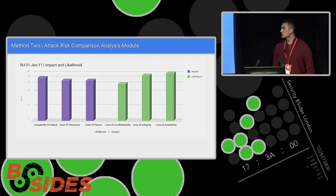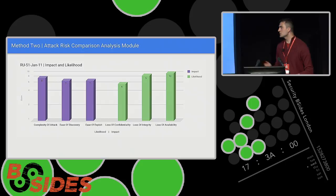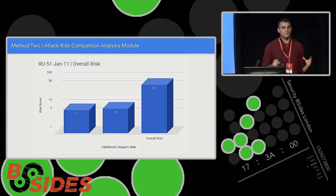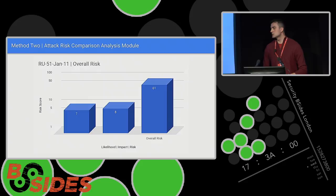Our second method looks at risk — what is the risk of this attack to my or my customer's organization? We ask several questions and rate them with a score between zero and ten. For those familiar with the OWASP risk-rating methodology, this is very similar. Questions include complexity of attack, ease of discovery, ease of exploit, loss of confidentiality, loss of availability, loss of integrity, and so on — all rated between zero and ten. We take an average of those scores, multiply them together, and get an overall risk score between zero and 100, with a higher number meaning higher risk. If we had two attacks — one with a risk of 70 and one of 30 — we'd prioritize the 70, because it intrinsically has a higher risk.